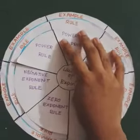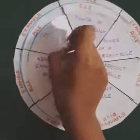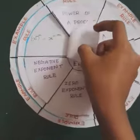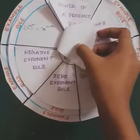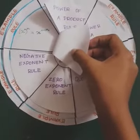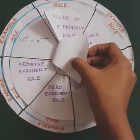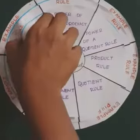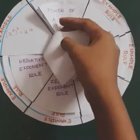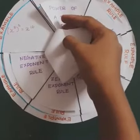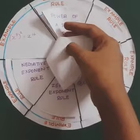The next law is the power rule. Its rule is: (x^m)^n = x^(m×n). An example is (x^8)^2 = x^16.